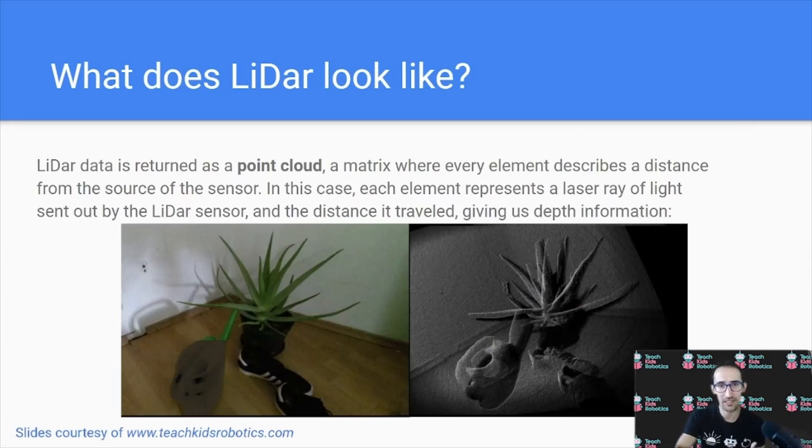Now what does this actually look like? This data, this laser scan information on the returned rays can also be stored in a matrix. And this matrix is known as a point cloud, since every point or laser that is returned gives us information about how far away and how far that laser traveled.